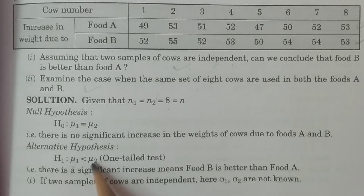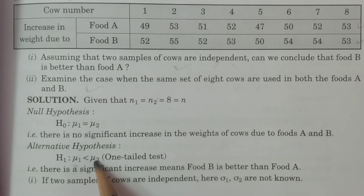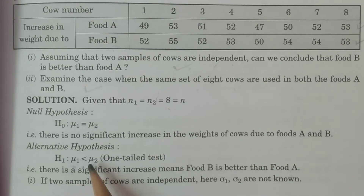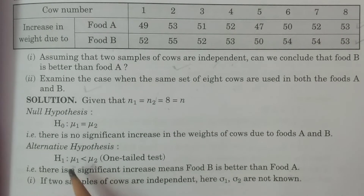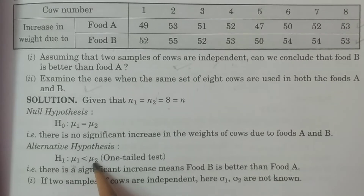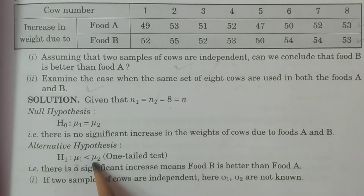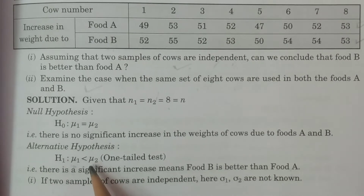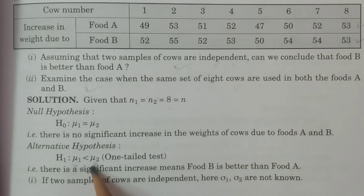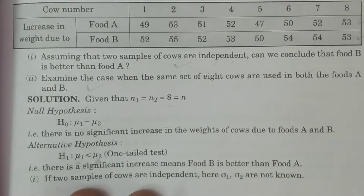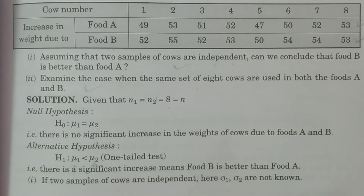Mu2 is the average weight gain of cows due to food B. So Mu1 less than Mu2 means food B produces more weight gain than food A. Therefore, Mu1 less than Mu2 is our alternative hypothesis, and we proceed to test against the null hypothesis.